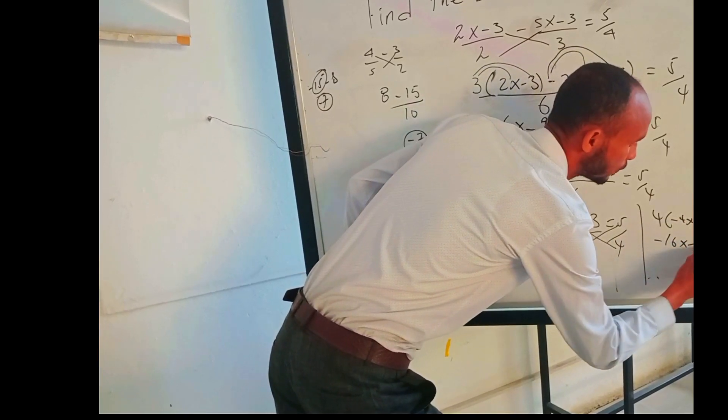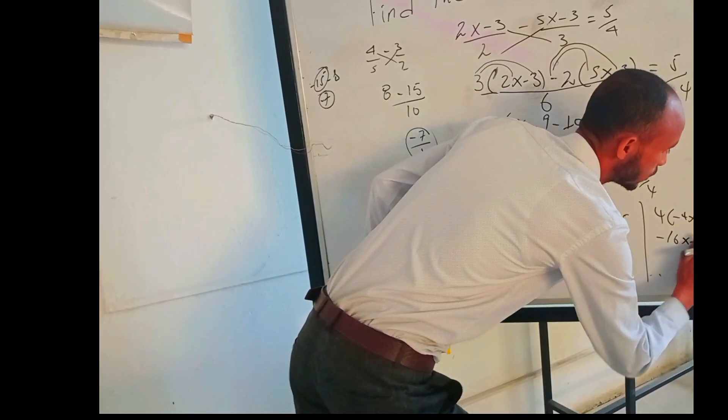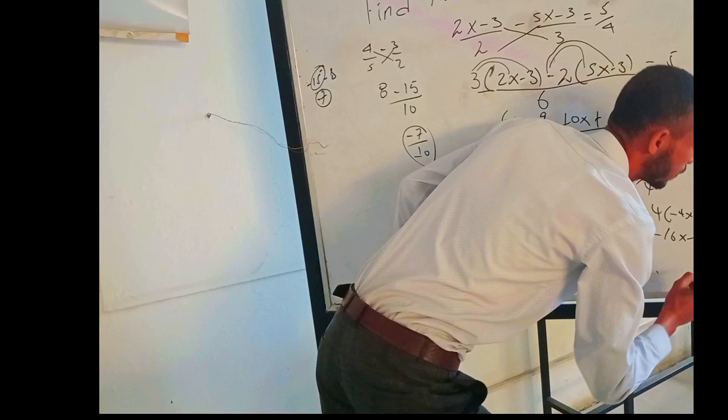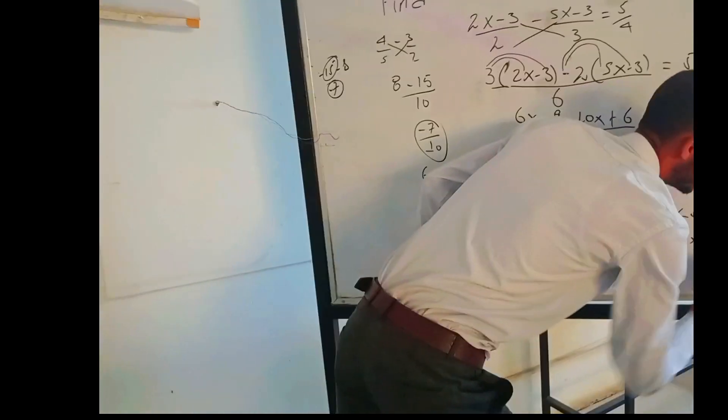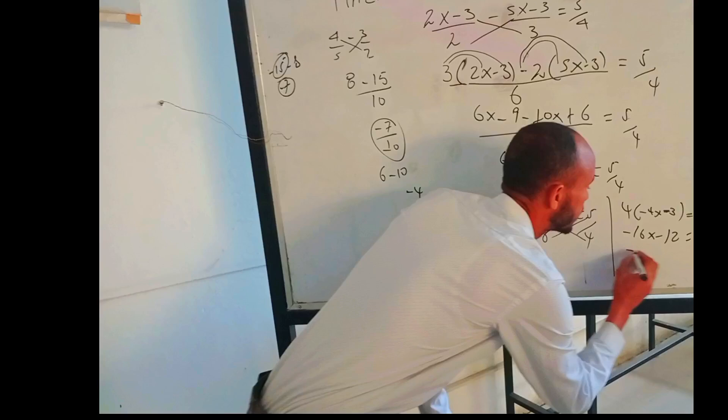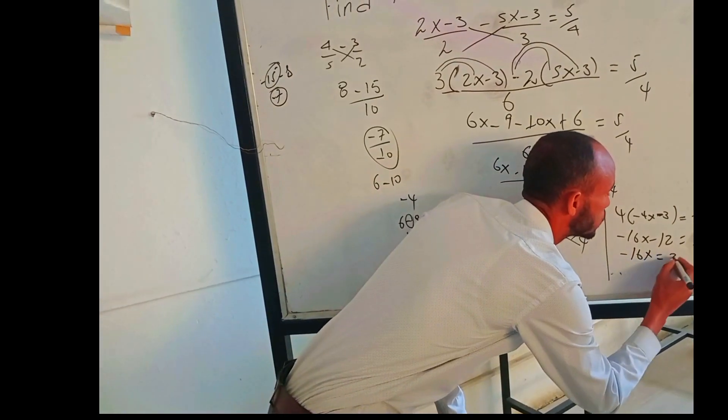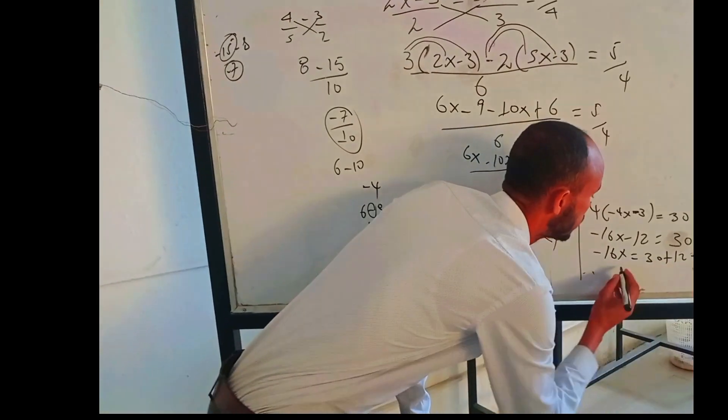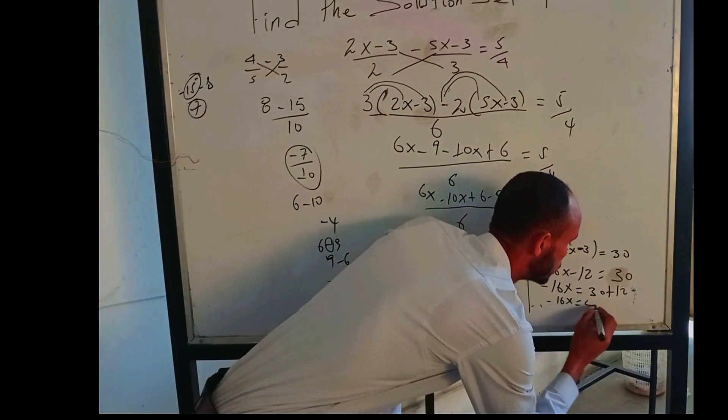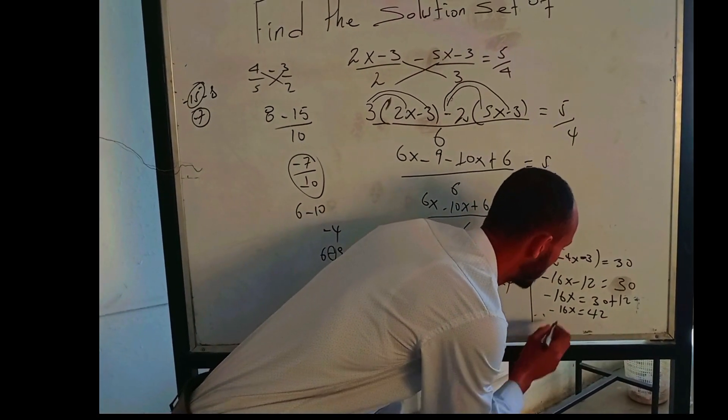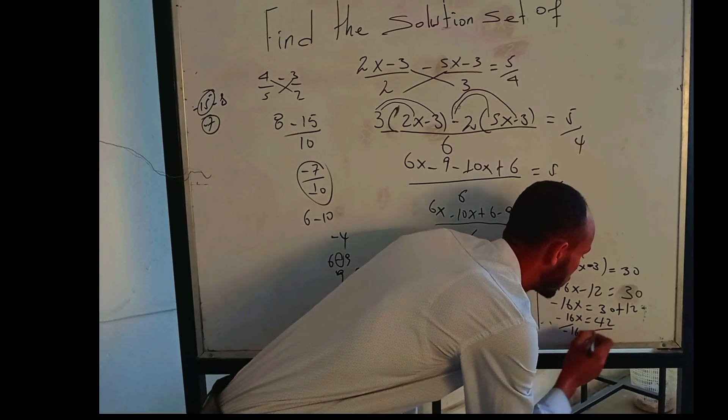4 times negative 3 is negative 12, which equals 30. So the next step is collect like terms: -16x equals 30 plus 12. So -16x equals 42.